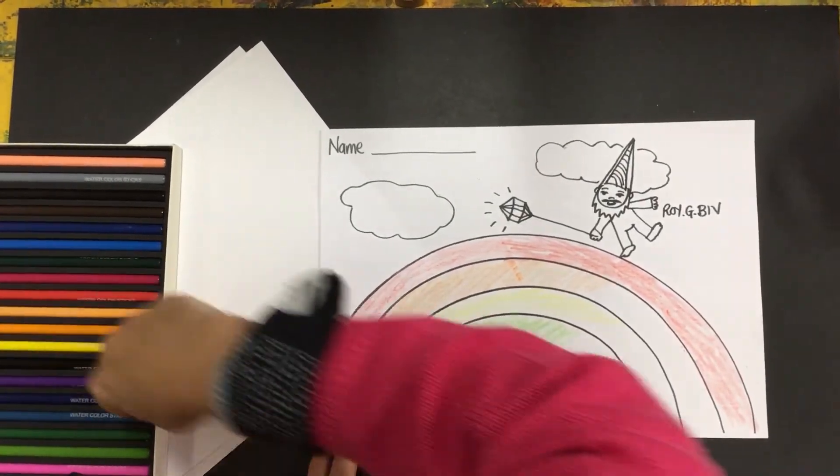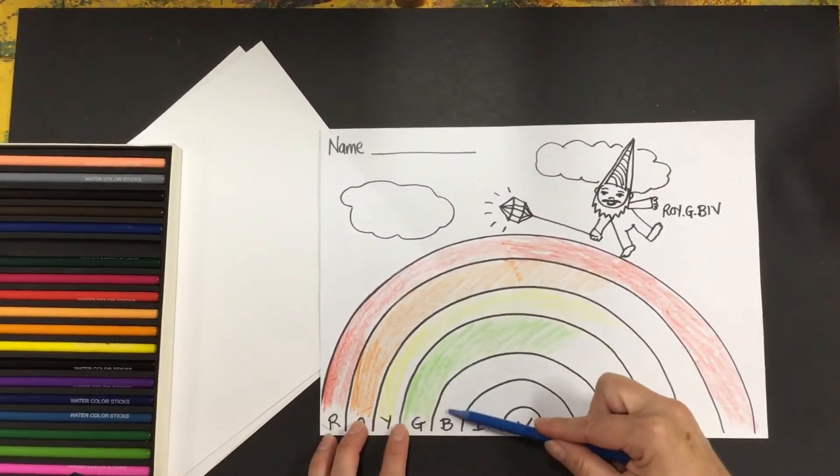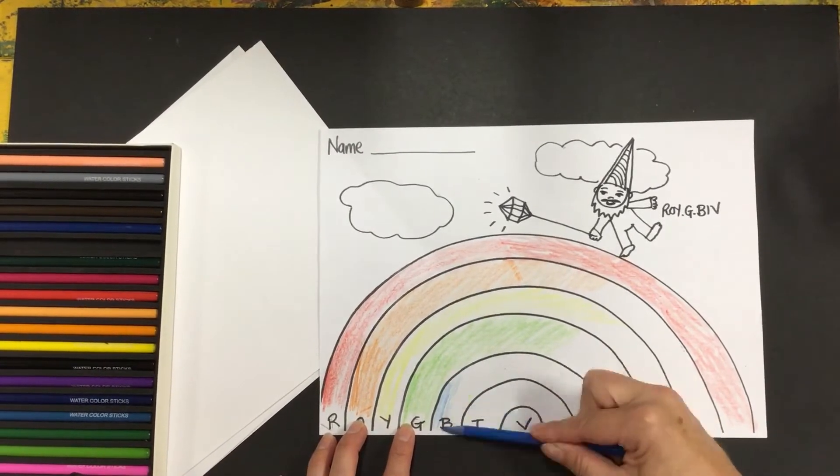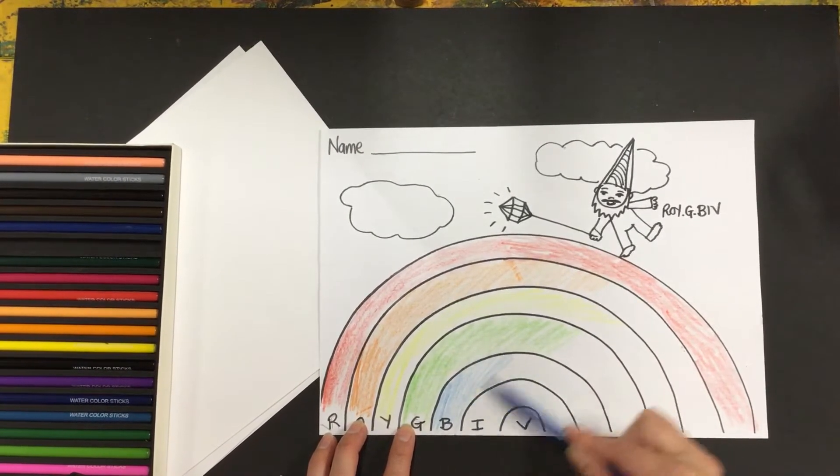B is for blue. Now I'm going to go for a light blue for blue.